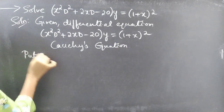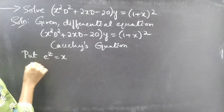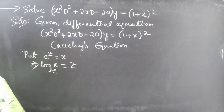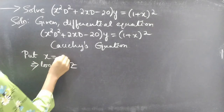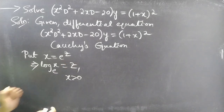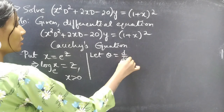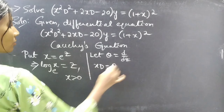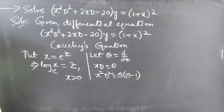Now let's make the substitution. Put x equals to e power z, then log x equals to z. Let theta equals to d by dz, where theta is a differential operator with independent variable z. Then x D equals to theta, and x squared D squared equals to theta times theta minus 1.